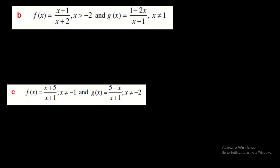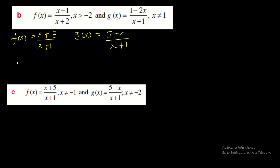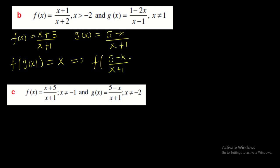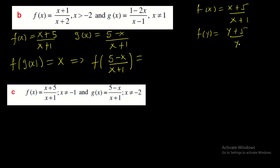Next example: f(x) = (x + 5)/(x + 1) and g(x) = (5 - x)/(x + 1). We check whether they are inverses by computing f(g(x)), which must equal x. Substitute g(x) = (5 - x)/(x + 1) into f. Since f(x) = (x + 5)/(x + 1), treating the input as y gives (y + 5)/(y + 1).